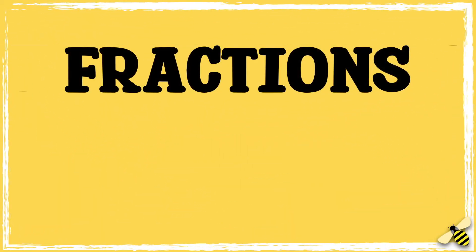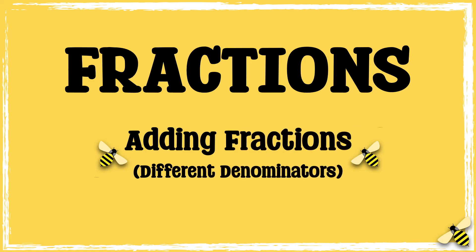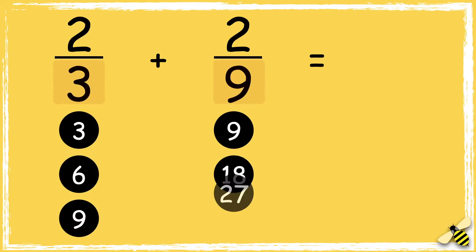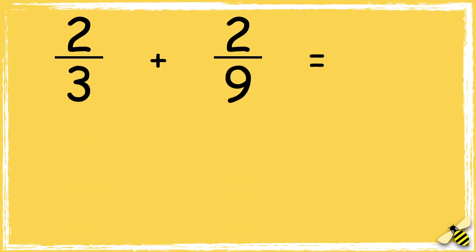In this video we're going to look at how to add fractions with different denominators. Here is a calculation: two-thirds add two-ninths. The denominators must be the same for us to add the fractions, and they're not currently the same. So the first thing we need to do is find a common denominator — the lowest common multiple of the denominators. Looking at the multiples of 3 and 9, I can see that 9 is the lowest common multiple.